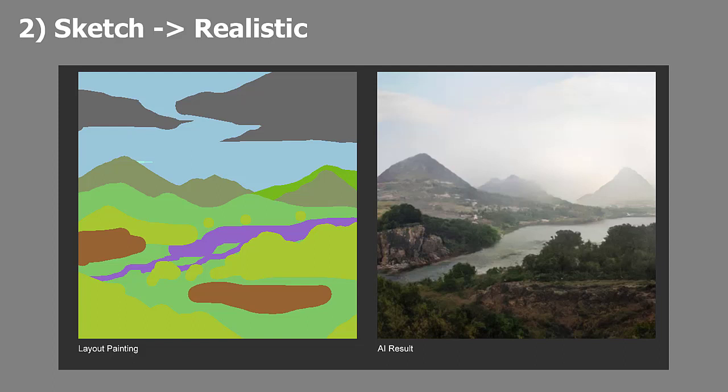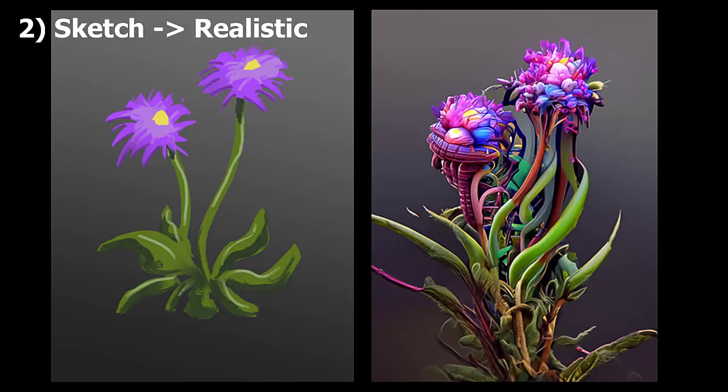Right now the software is limited to landscapes. Here's another image showing a rough sketch on the left and the Disco Diffusion AI doing its magic on the right. So the pieces to go from sketch to realistic are there, but I think a little more work will be needed to produce a generalized tool that gets the end result I'm after in all cases.